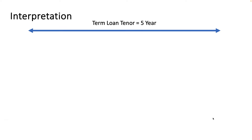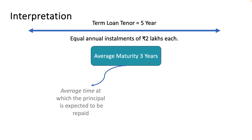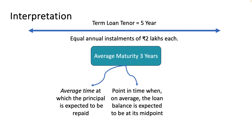The term loan tenor is 5 years with equal annual installments of 2 lakh every year. Even though the loan term is 5 years, the 3-year average maturity tells us that on average the loan repayments are expected to be complete in 3 years. This does not change the fact that the loan is for 5 years — it gives us insight into when the bulk of repayments are happening, specifically the average time at which the principal is expected to be repaid.